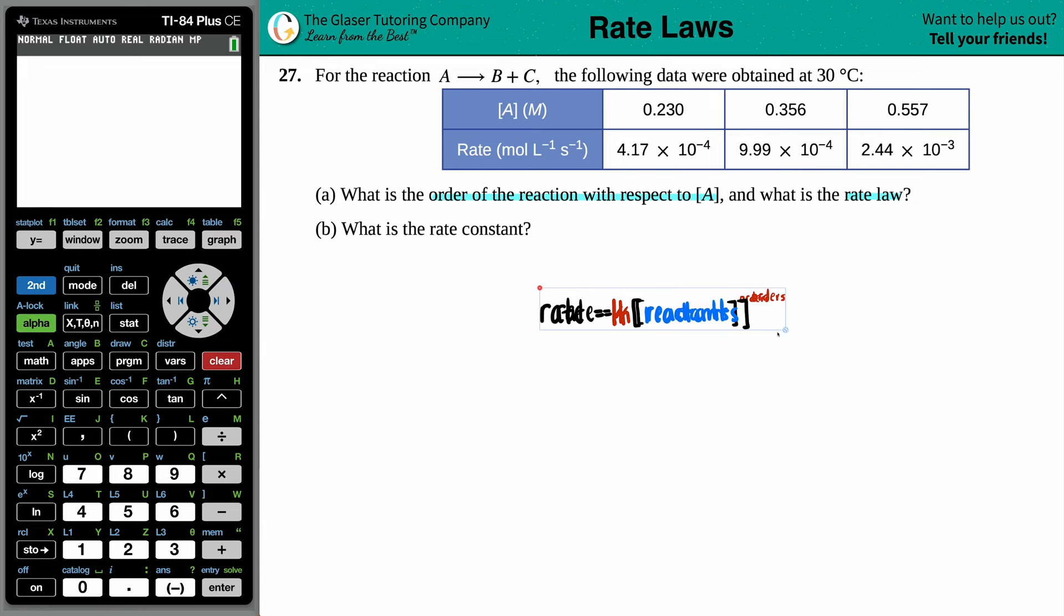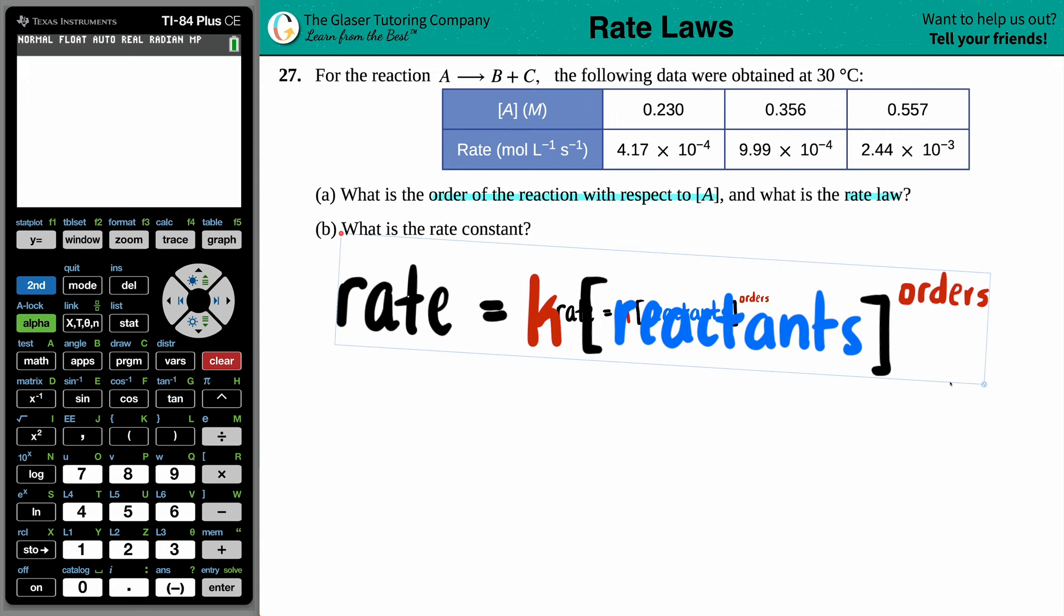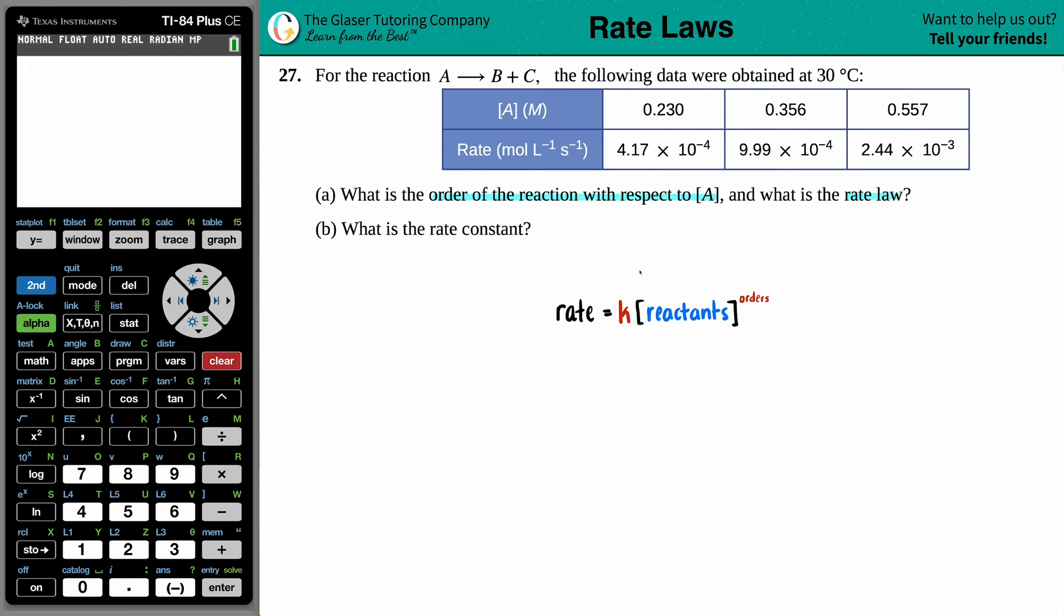And the general rate law is that, right? Rate equals K. Okay. Anyway, that was some cool graphics. The general rate law is rate equals K times the concentration of the reactants raised to their specific orders. So let's write out the more specific one for our case. If we have a rate law, the only number that we really care about is the order value.